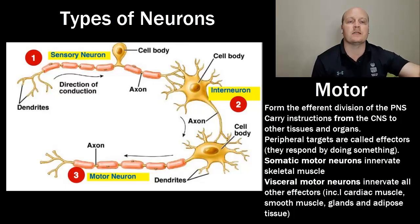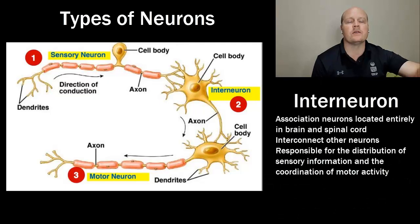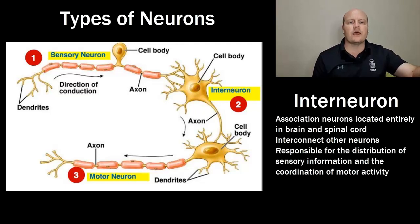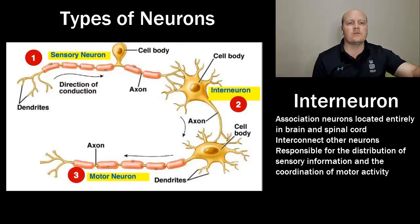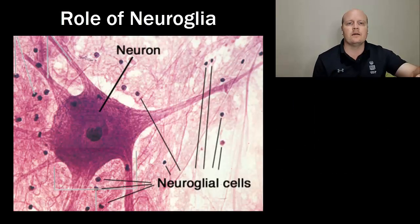We have somatic motor neurons which innervate our skeletal muscle — that's voluntary. We have visceral motor neurons which innervate all the other effectors: cardiac muscle, smooth muscle, glands, and adipose tissue. Our third type of neuron is the interneuron. Interneurons are association neurons located entirely in the brain and spinal cord. Their job is to connect other neurons together, distributing sensory information and coordinating motor activity — this is where all our thinking gets done.